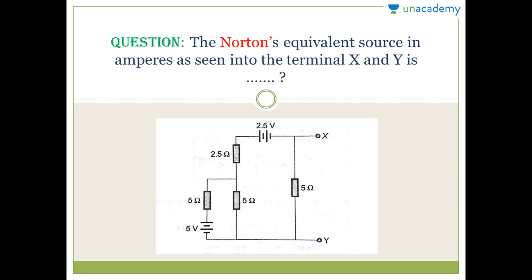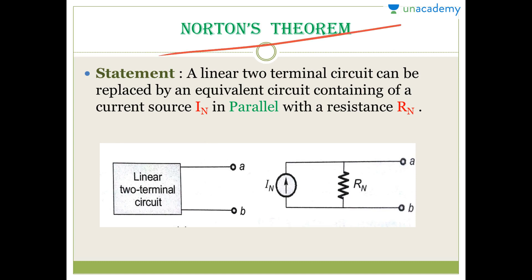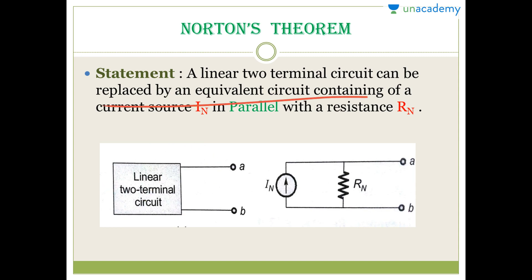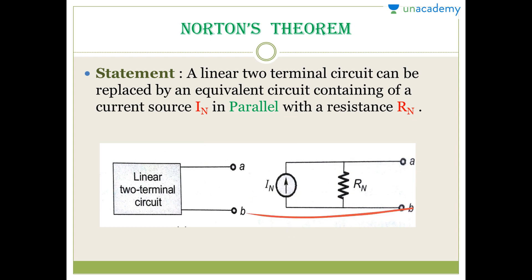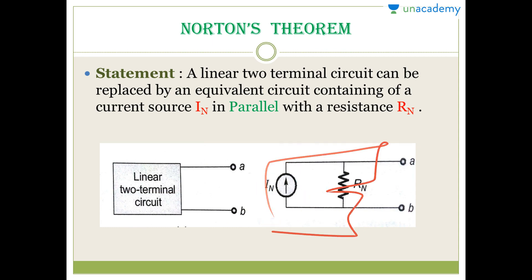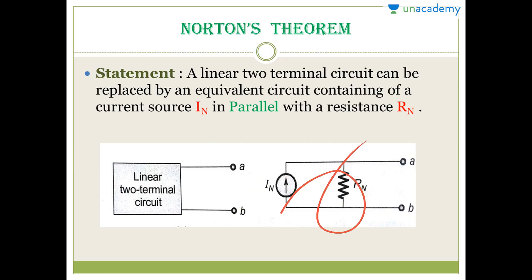Analyze the circuit: we have one voltage source, another battery, and resistances of 5 ohm, 2.5 ohm, 5 ohm, and 5 ohm. According to Norton's theorem statement: a linear two-terminal circuit can be replaced by an equivalent circuit containing a current source I_N in parallel with a resistance R_N. Any linear two-terminal circuit can be converted into this Norton equivalent circuit having a current source and a resistance in parallel.